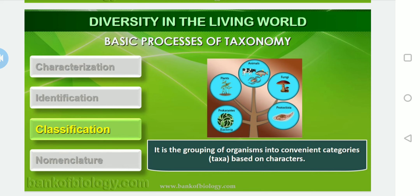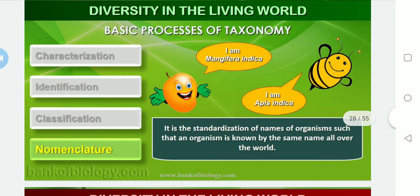The scientific term for each category or step or rank is called a taxon, and many such categories are called taxa. After characterization, identification, and classification, the last process of taxonomy is nomenclature — the standardization of the names of organisms such that an organism is known by the same name all over the world. It is very important because there are millions of plants and animal species present in the world.